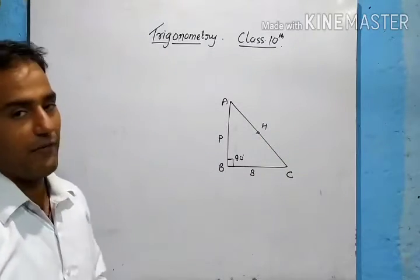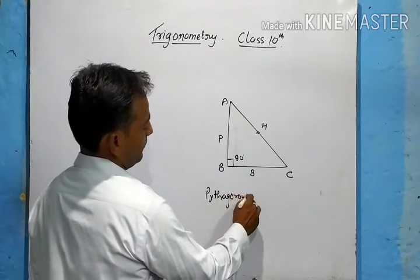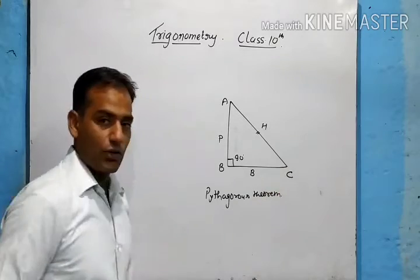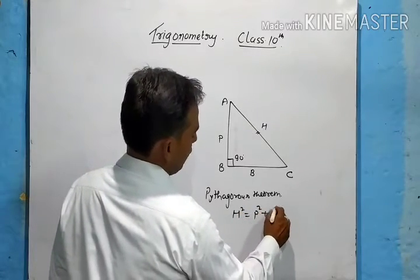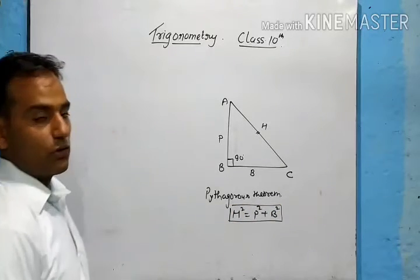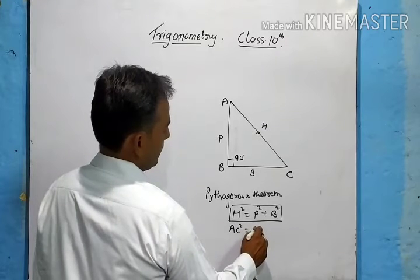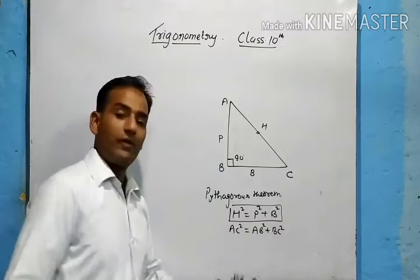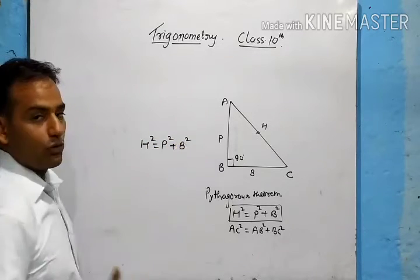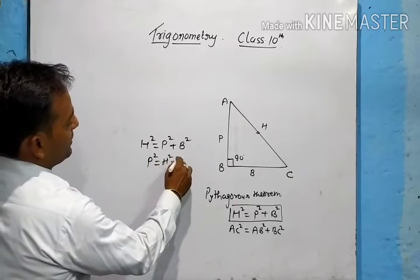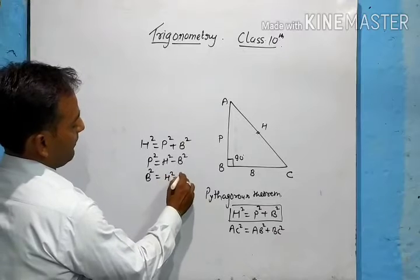Now for any right angle triangle we need to know Pythagoras theorem. Pythagoras theorem states: in any right angle triangle, the square of the hypotenuse is equal to the sum of squares of the other two sides — hypotenuse squared equals perpendicular squared plus base squared. If hypotenuse is AC, then AC² = AB² + BC². We can also write: perpendicular² = hypotenuse² − base², or base² = hypotenuse² − perpendicular². These three forms will be used directly in trigonometry.